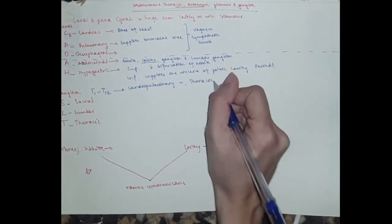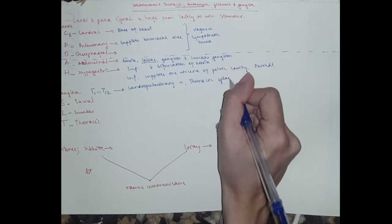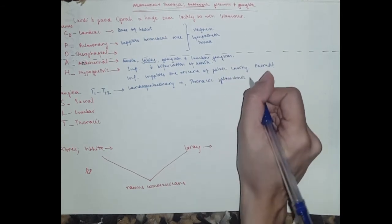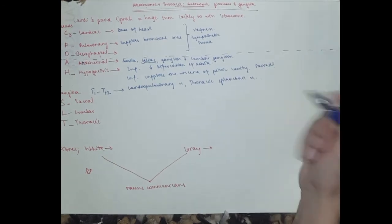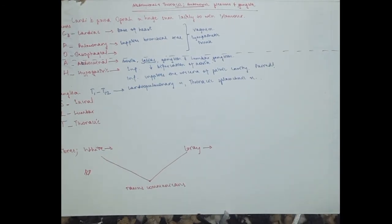And then you've got the greater, lesser, and least splanchnic nerves, which I told you about in my last videos. They're called the thoracic splanchnic nerves. You've got greater, lesser, and least. They help provide sympathetic innervation.